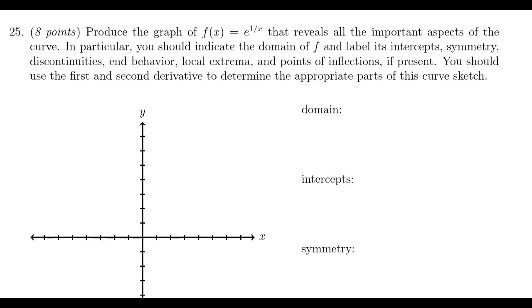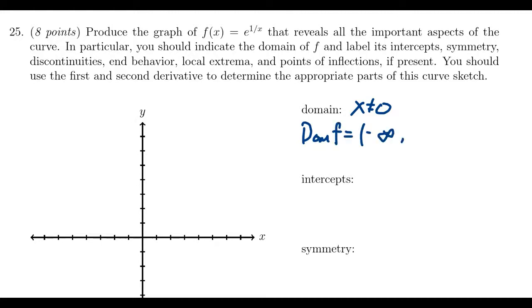The first thing about domain: the only concern is going to be this fraction right here. If the denominator goes to 0, the fraction would be undefined, the whole function would be undefined. So we have to make sure that x is not equal to 0. Writing the domain in interval notation, we get negative infinity to 0, union 0 to infinity. Every number except for 0 is included.